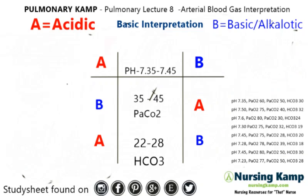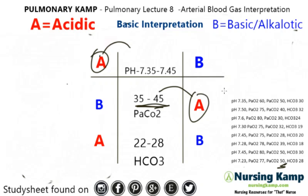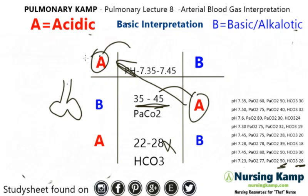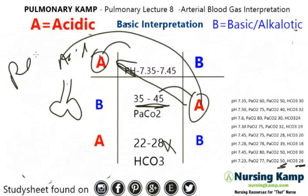Last one — pH is 7.23. We look at where that fits — it's closer to the acidic area, so we circle that. PCO2 is 50, so it's over to the acidic side. HCO3 is 28, so it's in the normal-to-basic range. We match the two together — this is respiratory, and this is acidosis. So respiratory acidosis.